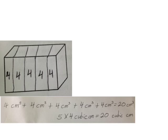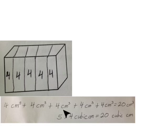Here's a number sentence that expresses the volume of this prism using these layers: 4 cubic centimeters plus 4 cubic centimeters plus 4 cubic centimeters plus 4 cubic centimeters plus 4 cubic centimeters equals 20 cubic centimeters.